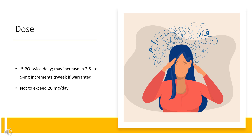Focalin XR: For patients not taking Focalin or methylphenidate, 10 mg PO once daily initially, may increase in 10 mg increments per week if warranted, not to exceed 20 mg per day. When switching from Focalin, administer the same total daily dose once daily. When switching from methylphenidate, initiate with half the total daily dose administered once daily, not to exceed 40 mg per day.